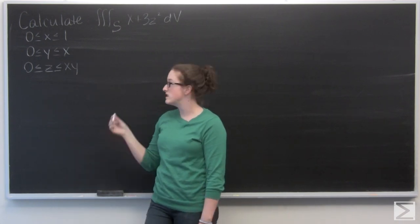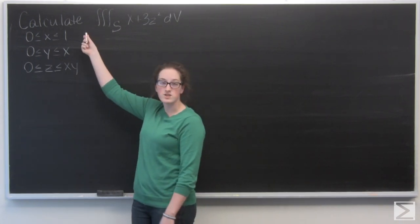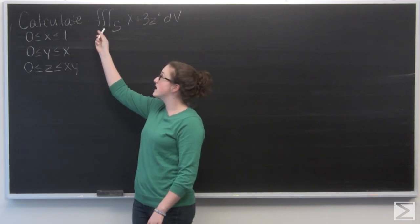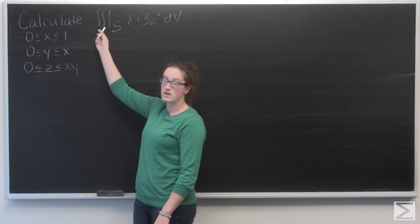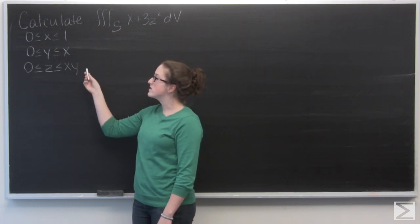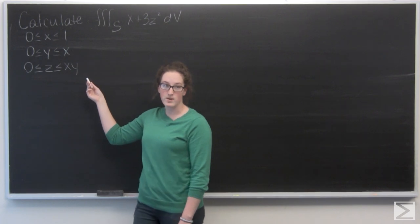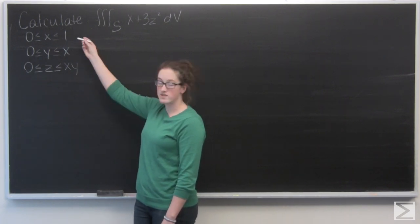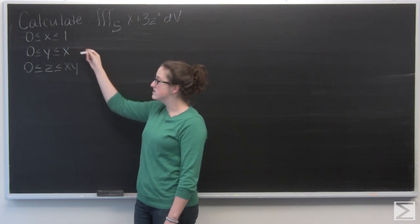Remember from the section that you want the outside integral to just be numbers. The inside integral can be a function of the outer one, and then the farthest one to the inside can be a function of both. So here, we really only have one choice to set up our limits of integration. We need x on the outside, then y, and z.